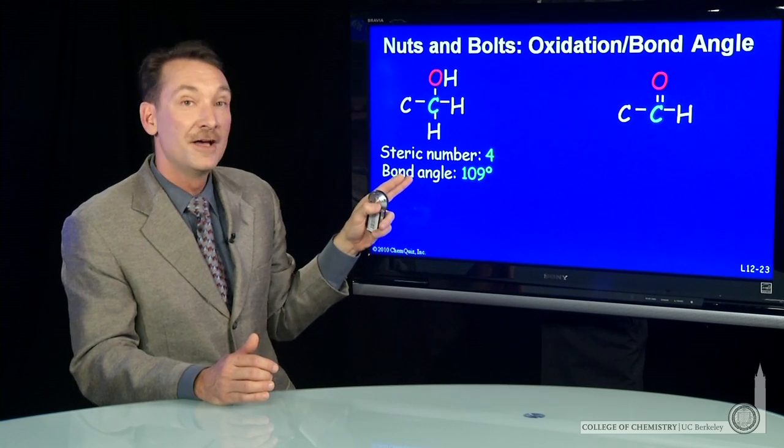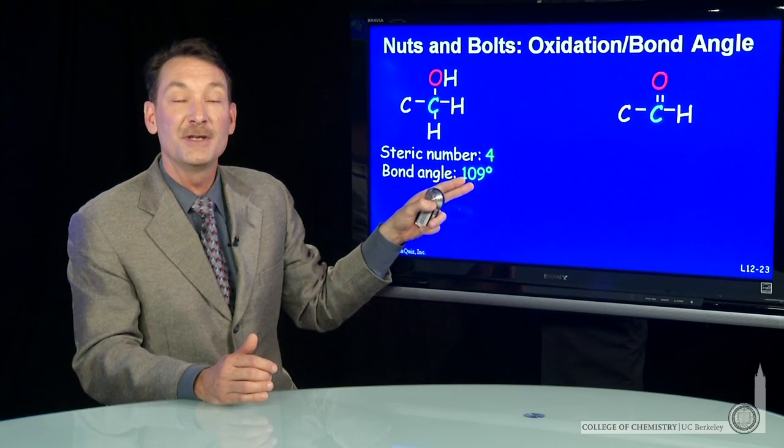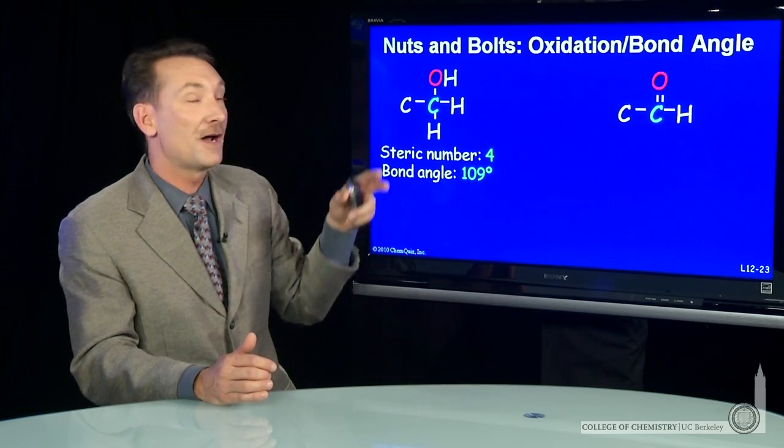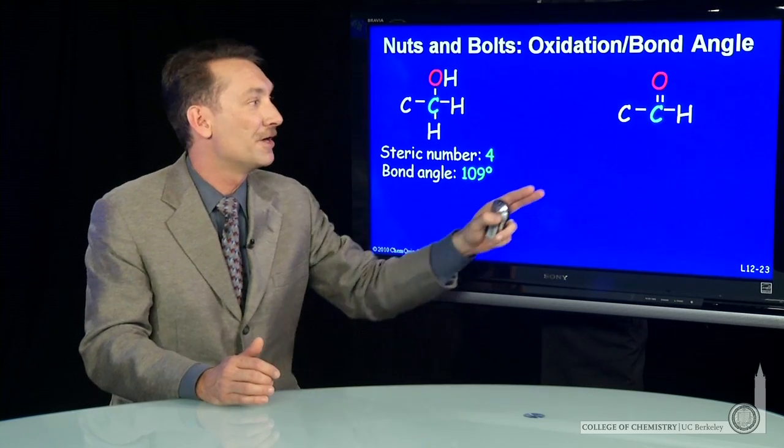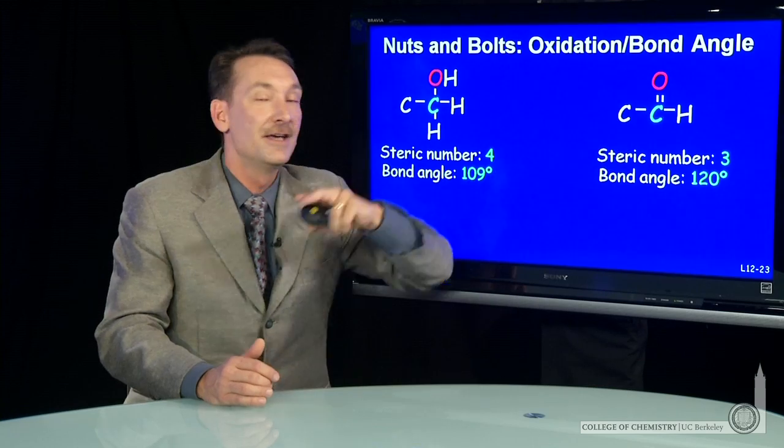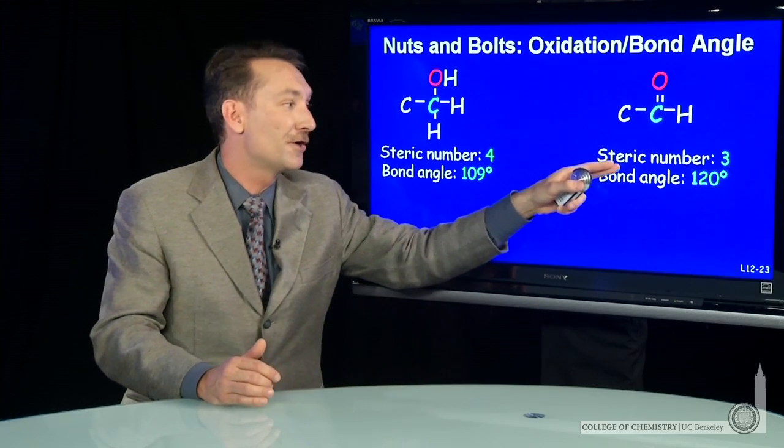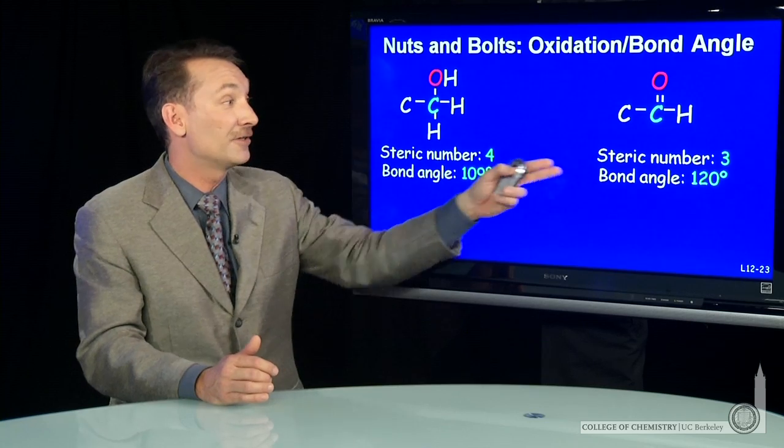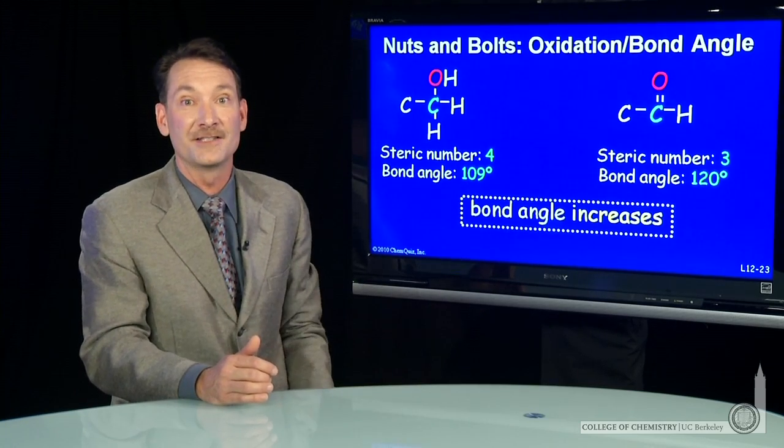Steric number 4 here, so the bond angle is going to be tetrahedral. There's going to be tetrahedral orientation around this carbon, a bond angle of 109 degrees. And this carbon here, steric number 3, a bond angle of 120. So the bond angle increases as I do that oxidation.